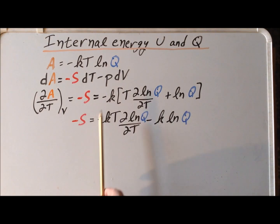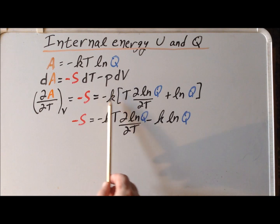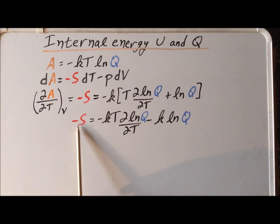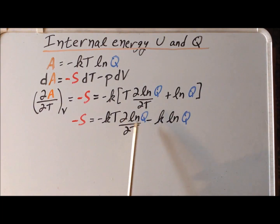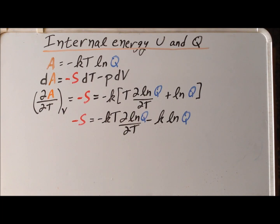Multiplying through by the minus k Boltzmann constant gives us that the negative of the entropy is equal to minus kT times the partial derivative of the natural log of Q with respect to T, minus k times the natural log of Q.